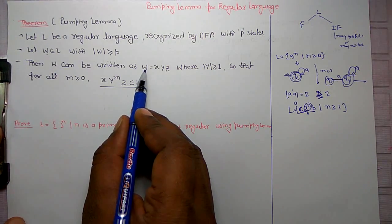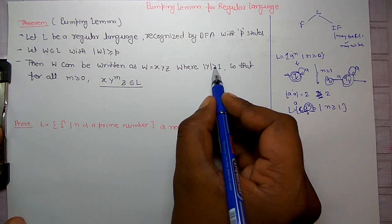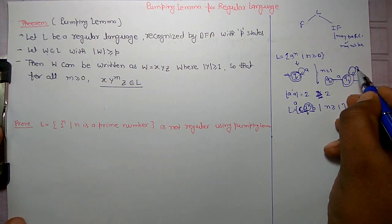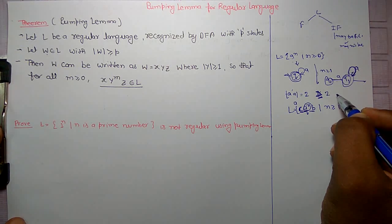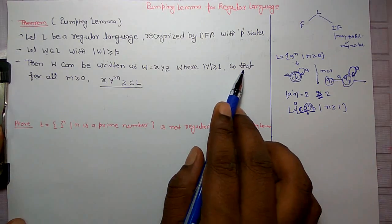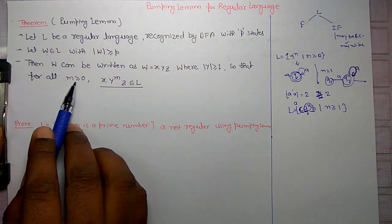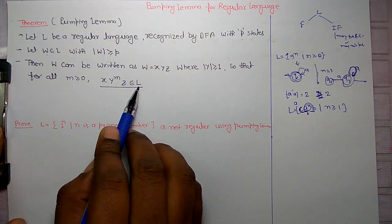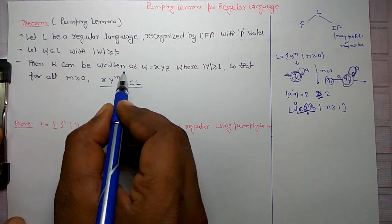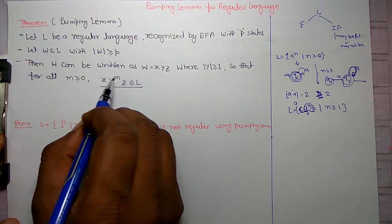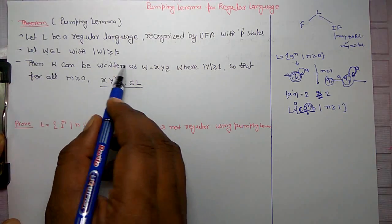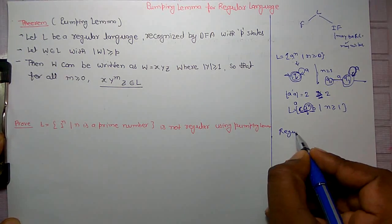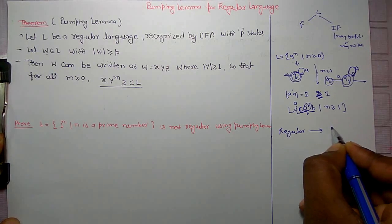Where |Y| ≥ 1, meaning at least there should be one loop — at least one time you read A. For all M ≥ 0, XY^M Z must belong to the same language. If for all values of M the resulting string belongs to language L, then it is a regular language. If there is a regular set, it will follow pumping lemma.